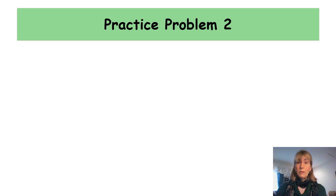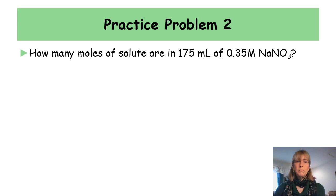Another practice problem. How many moles of solute are in 175 milliliters of a 0.35 molar sodium nitrate solution? Again, molarity is the key term. The equation is M = moles of solute ÷ liters of solution. This time molarity is given and we're asked for moles of solute, so we solve for the unknown.